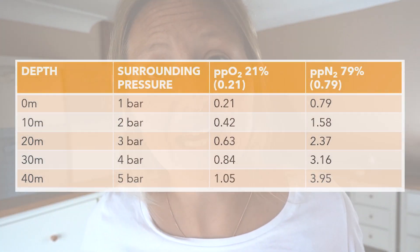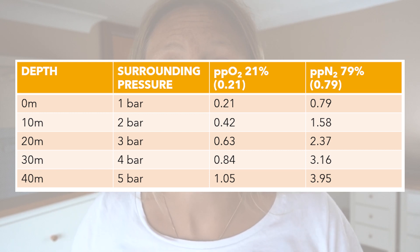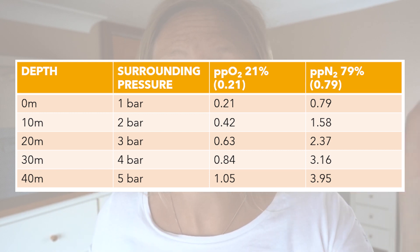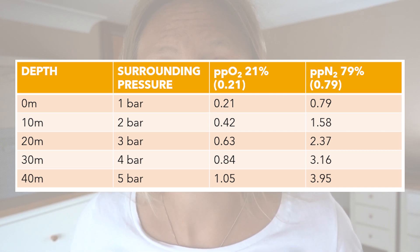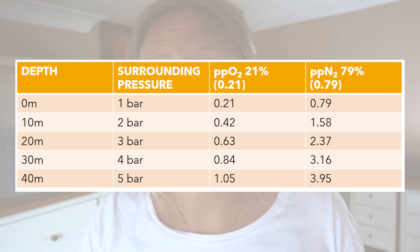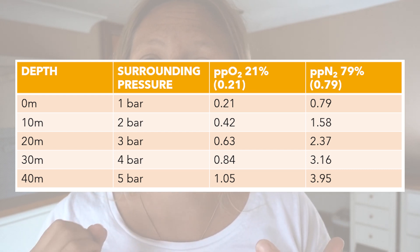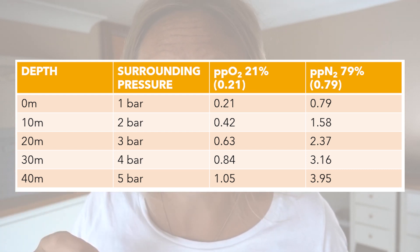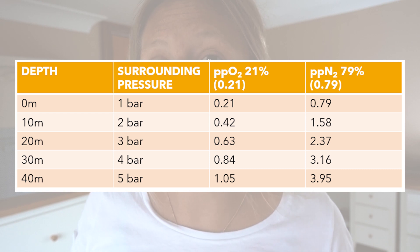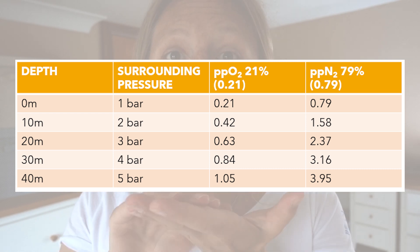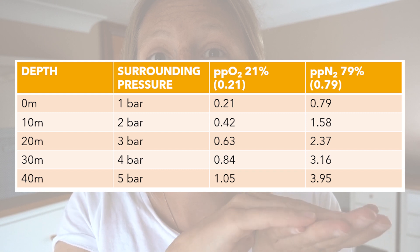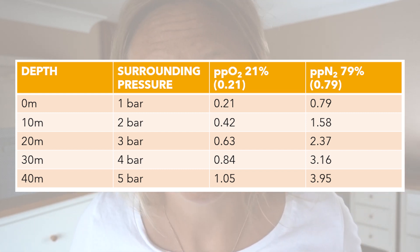Let's see how partial pressure changes as we descend under the water. Let's look at this table for some examples. In the first column you've got your depth, in the second column you've got the surrounding pressure measured in bar, and in the next two columns are our individual gases — oxygen and nitrogen. As we descend down the table, we can see how the partial pressure of these individual gases changes, and it's always in correspondence to the surrounding pressure.